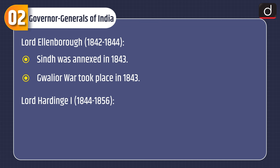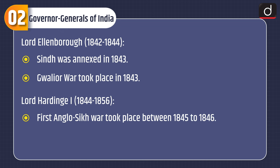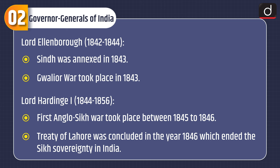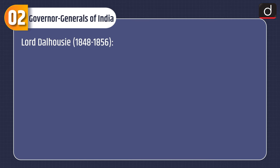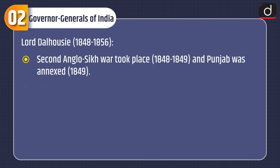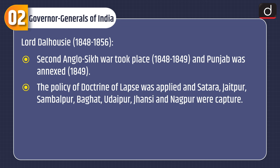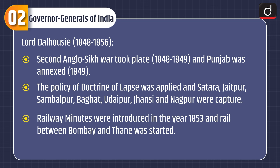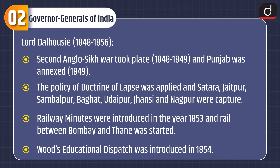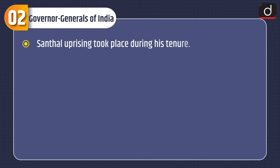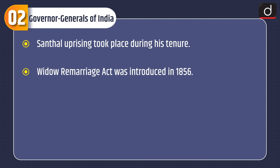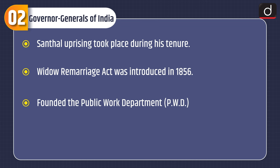Lord Hardinge I, 1844–1856: the First Anglo-Sikh War took place between 1845 and 1846. The Treaty of Lahore was concluded in 1846, ending Sikh sovereignty in India. Lord Dalhousie, 1848–1856: the Second Anglo-Sikh War took place 1848–1849 and Punjab was annexed in 1849. The policy of Doctrine of Lapse was applied and Satara, Jaitpur, Sambalpur, Bhagat, Udaipur, Jhansi, and Nagpur were captured. Railway minutes were introduced in 1853 and rail between Bombay and Thane was started. Wood's Educational Dispatch was introduced in 1854. The Santhal Uprising took place during his tenure. The Widow Remarriage Act was introduced in 1856 and the Public Works Department (PWD) was founded.